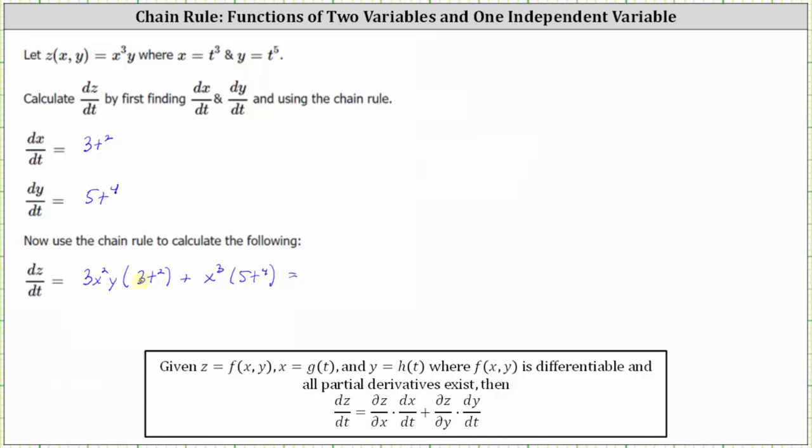So for the first product, three times three is nine. So we have nine t squared, and then x squared is the square of t cubed, and y is t to the fifth. And then we have plus five t to the fourth, and then x cubed is the cube of t to the third.